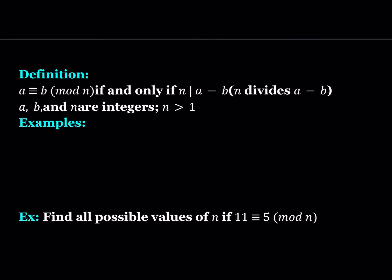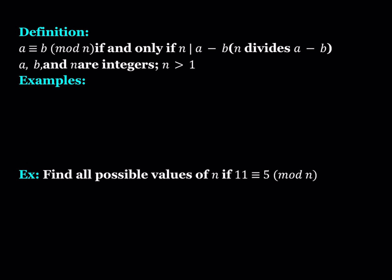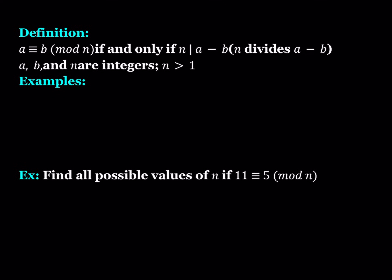Now let's look at a more formal definition of modular arithmetic — a congruence statement. So a is congruent to b mod n if and only if n divides a minus b. In this case, a, b, and n are integers and n needs to be greater than 1.